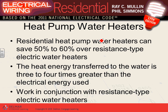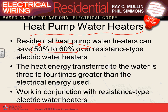Heat pump water heaters save 50-60% compared to resistive electrical water heaters. They work like a reverse air conditioner — instead of throwing extracted room heat outside, they dump it across a coil embedded inside a water tank, heating the water. They transfer heat energy rather than generating it, making them 3-4 times more efficient than resistance heating.